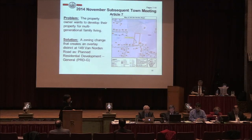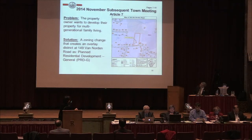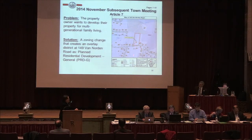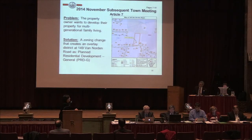What you can see here on the map is the property at 149 Van Norden Road. The property owner's goal is to put a second house on this property, and they're interested in multi-generational living.